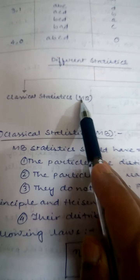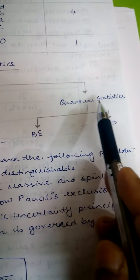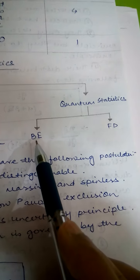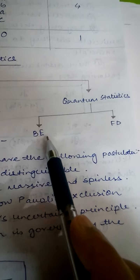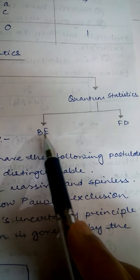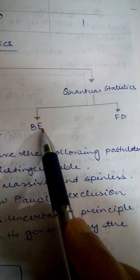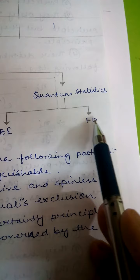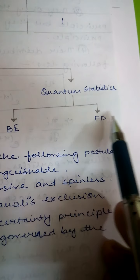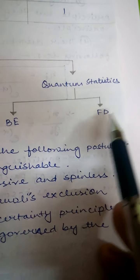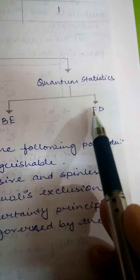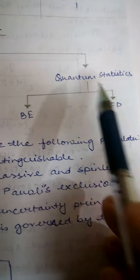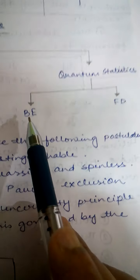The other type is quantum statistics. In quantum statistics there are two types: Bose-Einstein statistics, named after S.N. Bose and Albert Einstein, in short BE statistics; and Fermi-Dirac statistics, named after the famous scientists Fermi and Dirac, in short FD statistics.